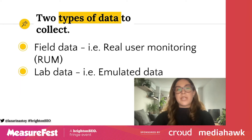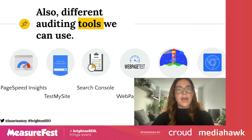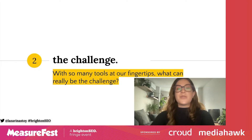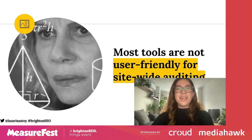There are two types of data that Google collects and analyzes: field data and lab data. There is also a wide array of tools that can be used, each of which has their own unique set of benefits, limitations, and use cases. So with all those tools at our fingertips, what could possibly be the challenge of auditing Core Web Vitals?